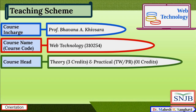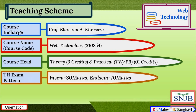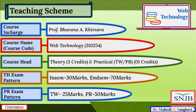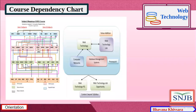The course has theory with three credits, and a practical attached having one credit. The practical includes term work as well as external practical. The theory exam pattern is: in-semester exam for 30 marks and end-semester exam for 70 marks. The practical associated with Web Technology is Web Technology Lab, having a total of 75 marks divided into 25 marks for term work and 50 marks for practical.